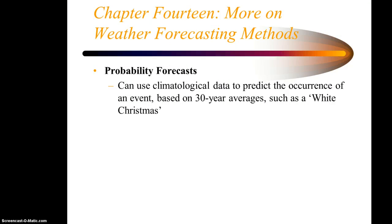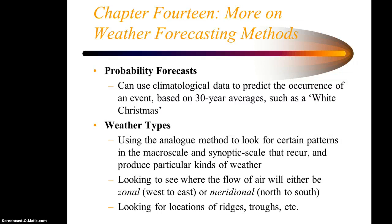Probability forecasts can use climatological data to predict the occurrence of an event, such as 30-year averages — for example, a white Christmas. There are maps that show the probability of a white Christmas based on 30-year statistical averages. Then there's forecasting by weather types, using the analog method to look for certain patterns in the large scale — the macroscale and the synoptic scale — that recur and produce particular kinds of weather.